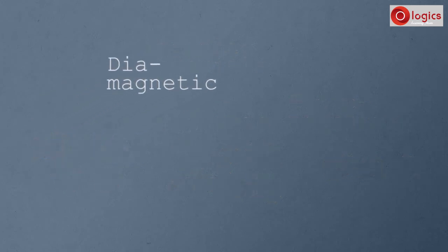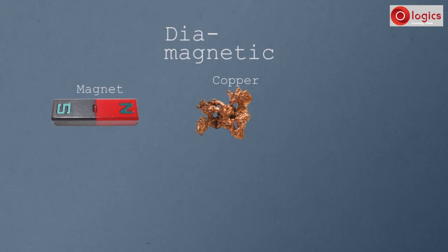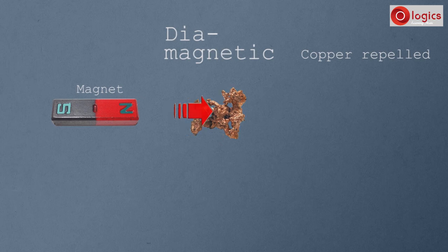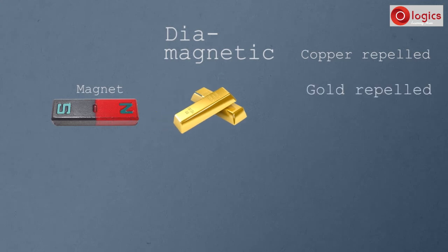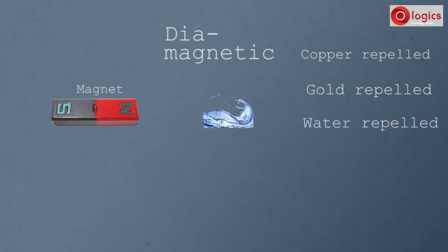Let's see about diamagnetic materials. This is the magnet. This is the piece of copper. Take it close to the magnet. See, copper is repelled by the magnet. This is the piece of gold. Gold is also repelled by the magnet. This is water. Water is also repelled by the magnet.